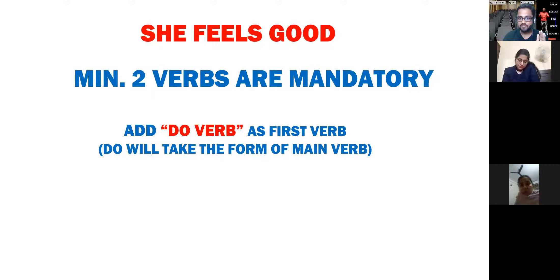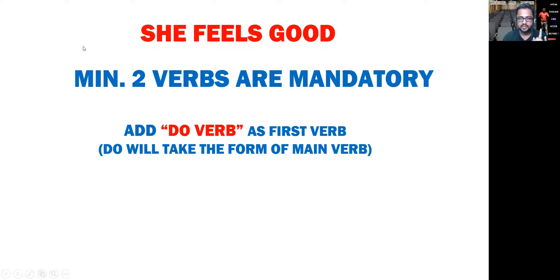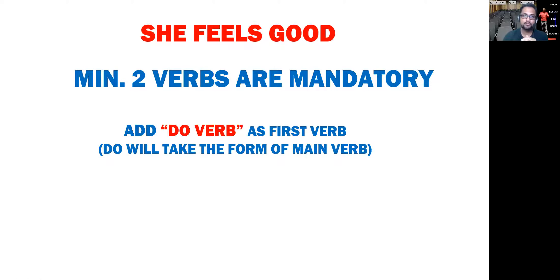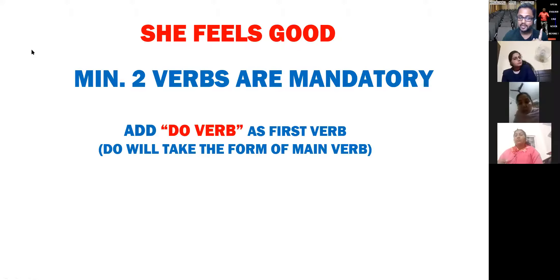Add a do verb as the first verb. Do will take the form of the main verb. यहाँ पर हमें एक extra verb चाहिए जो do verb होगा। अब do verb में do बैठेगा, does बैठेगा, या did बैठेगा — यह depend करता है कि sentence में जो already verb है — 'feels' — वो क्या है। Feels — as per verb family — यह present one है। और अगर present one है, तो जो extra verb आएगा, do verb, वो भी present one में आएगा। और present one में do का क्या होता है? Does.